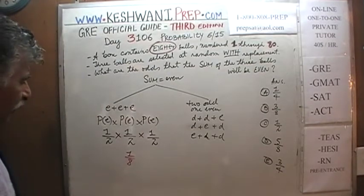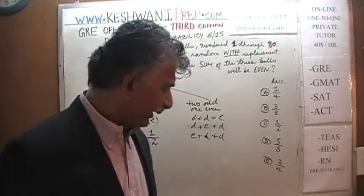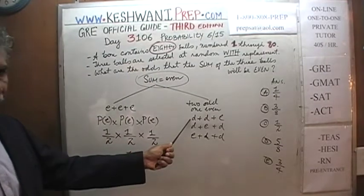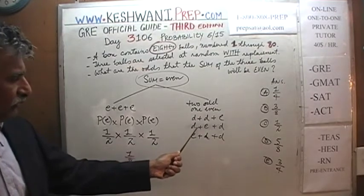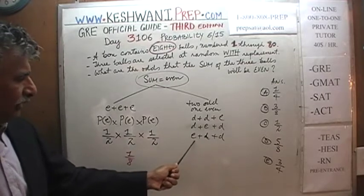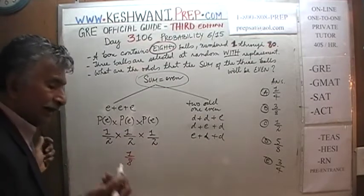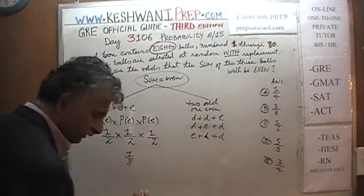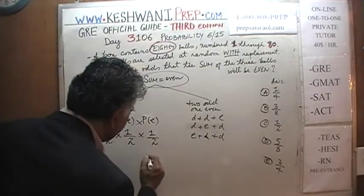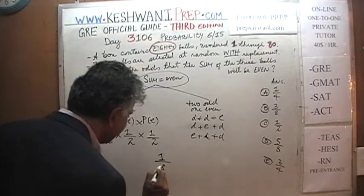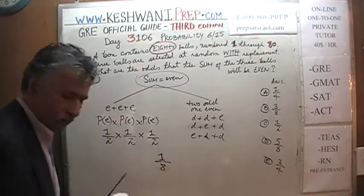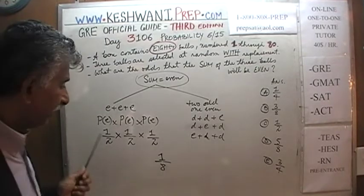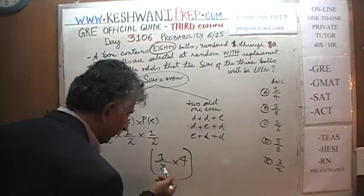But we don't get just one chance at it — we get four chances. The sum can be even with all three even, or with two odds and one even arranged three different ways: odd-odd-even, odd-even-odd, or even-odd-odd. There are four different ways we can achieve an even sum, each with probability one eighth. Therefore, the total probability is simply four times one eighth, which equals one half.